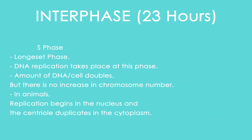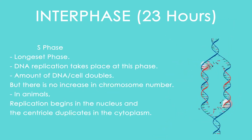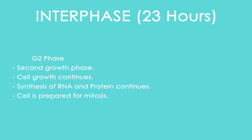The second sub-phase is the S phase, or synthetic phase — the longest phase — where DNA replication takes place. The amount of DNA per cell doubles; however, there is no increase in chromosome number. In animal cells, replication begins in the nucleus, and the centriole duplicates in the cytoplasm.